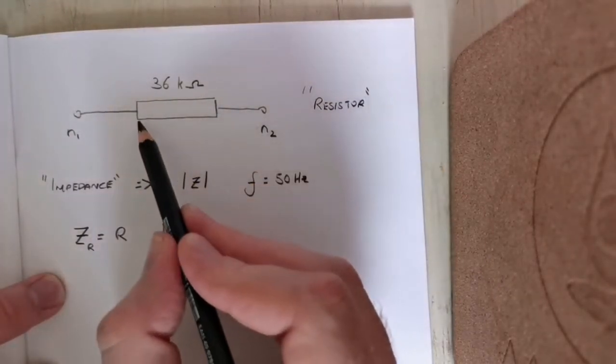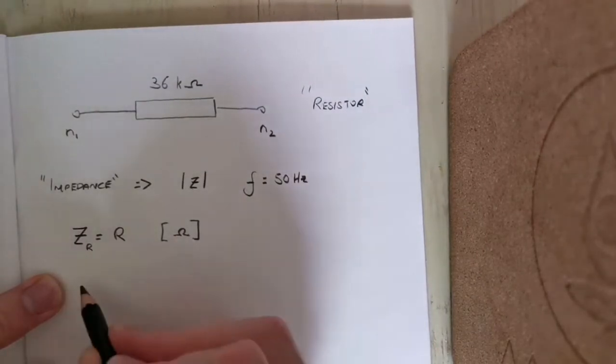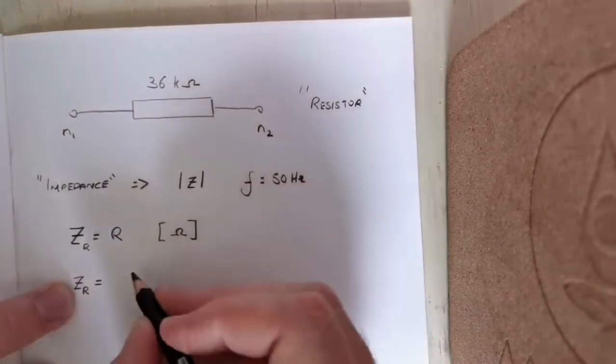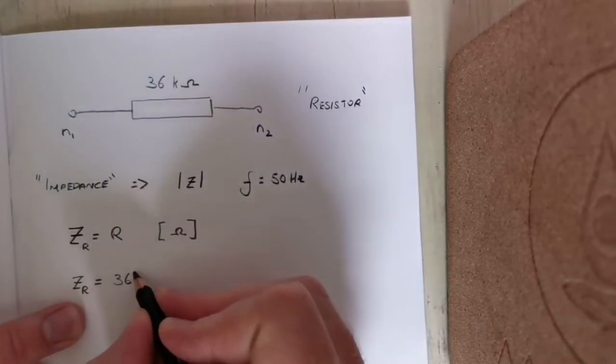For this example here we have a resistor, so the overall impedance of it is just its resistance which in this case is just 36 kilo ohms.